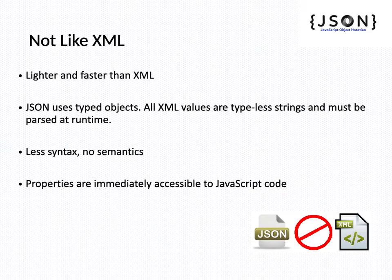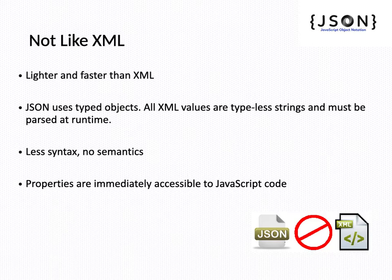But JSON is not exactly like XML. JSON is lighter and faster than XML. JSON uses typed objects, whereas all XML values are typeless strings and must be parsed at runtime. JSON has less syntax and no semantics, and properties are immediately accessible to JavaScript code.